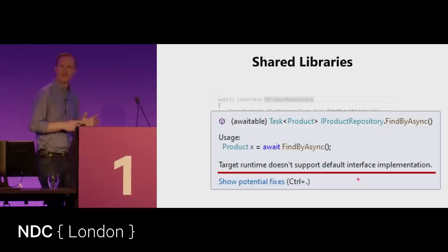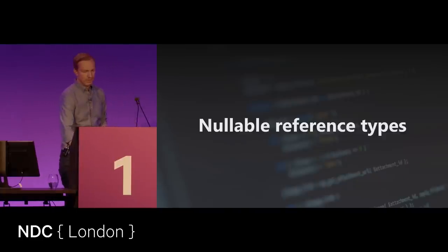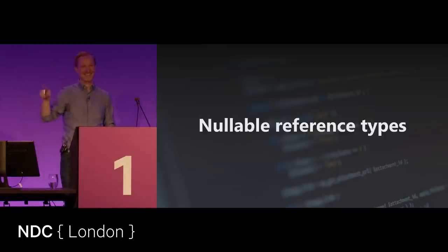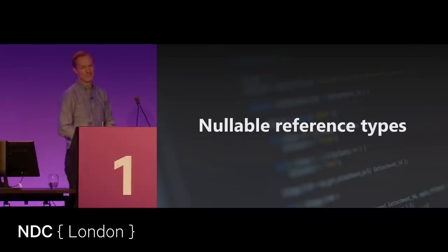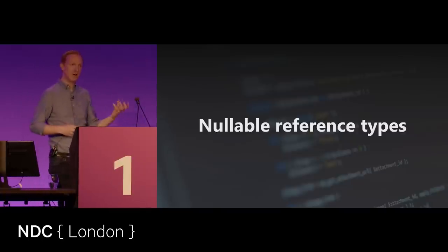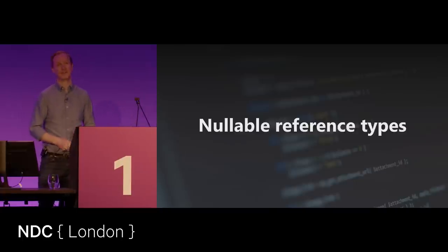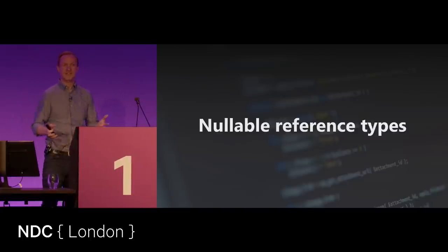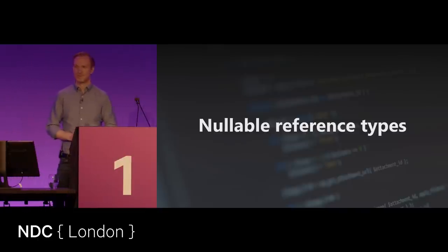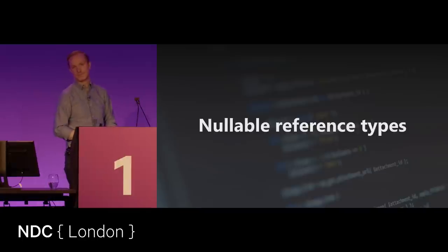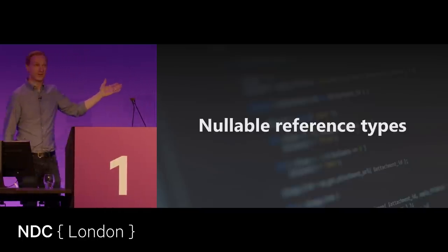Probably one of my favorite language features added in a very long time: nullable reference types. I take it that most of you have had a null reference exception — you're going to get a null reference exception unless maybe it's your first day as a developer. So what do we do if we cannot go back in time and fix the mistake of making it easy to add null in C#? Adding null is really a design flaw in the language.